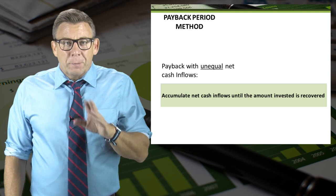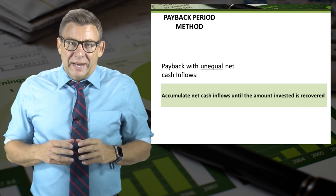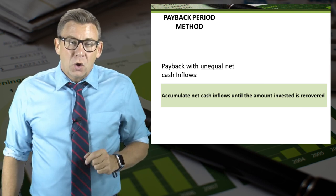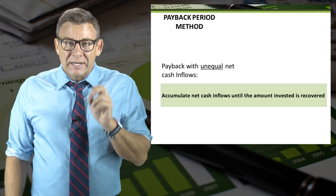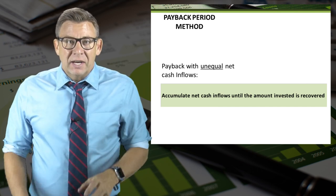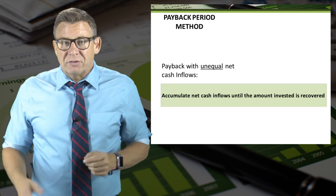For payback with unequal net cash inflows, there's no formula. We need to accumulate net cash inflows until the amount of investment is recovered.